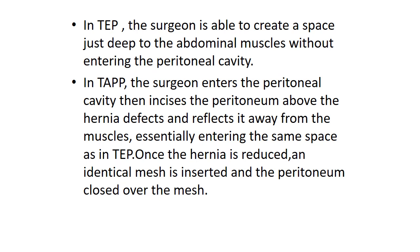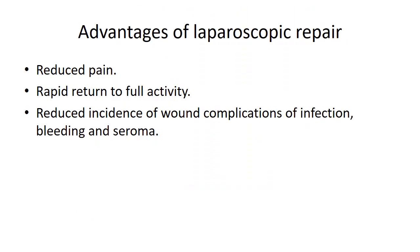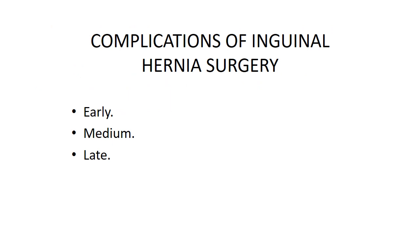In TEP, the surgeon creates a space just deep to the abdominal muscles without entering the peritoneal cavity. In TAPP, the surgeon enters the peritoneal cavity, incises the peritoneum above the hernia defects, and reflects it away from the muscles, essentially entering the same space as in TEP. Once the hernia is reduced, an identical mesh is inserted and the peritoneum closed over the mesh. Laparoscopic repair reduces pain and allows rapid return to full activity, with reduced incidence of wound complications including infection, bleeding, and seroma.